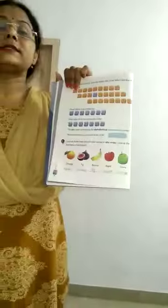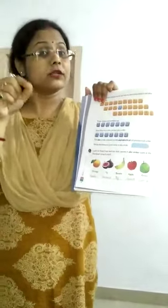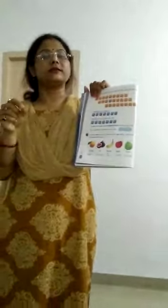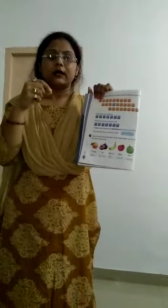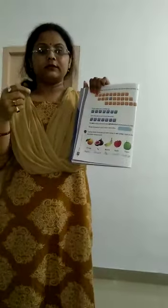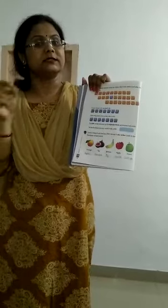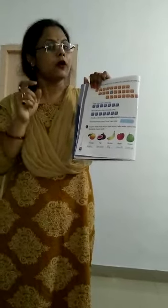Now students, most important thing: what is A, B, C, D order? What is alphabetical order? The A, B, C, D order is alphabetical order. Putting words in order of the alphabet is known as A, B, C, D order.